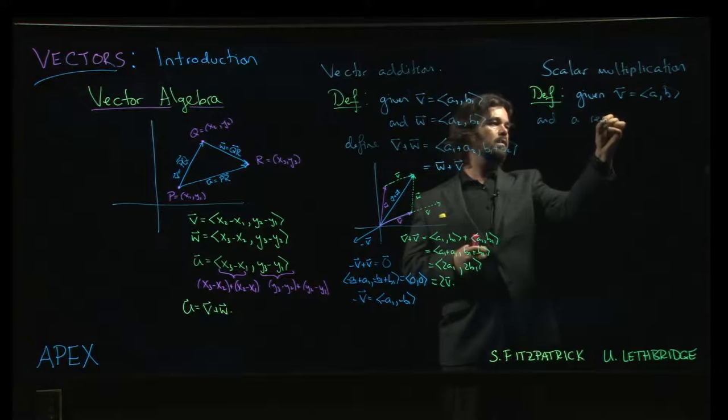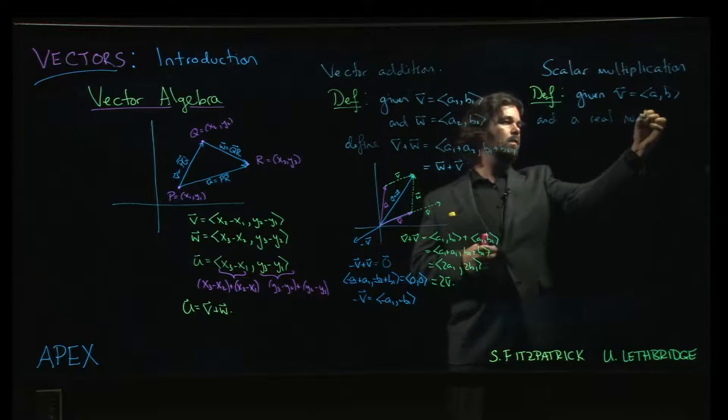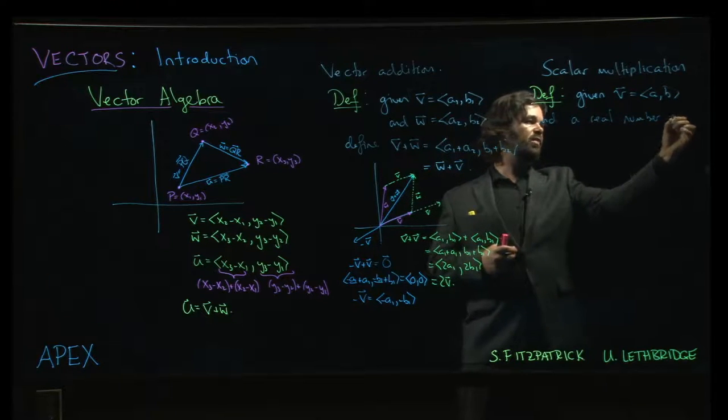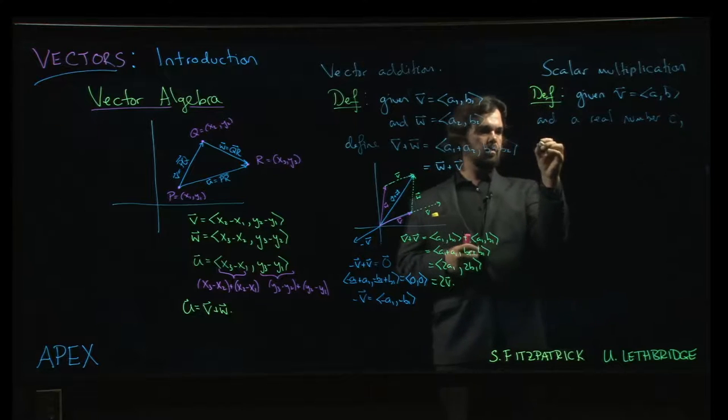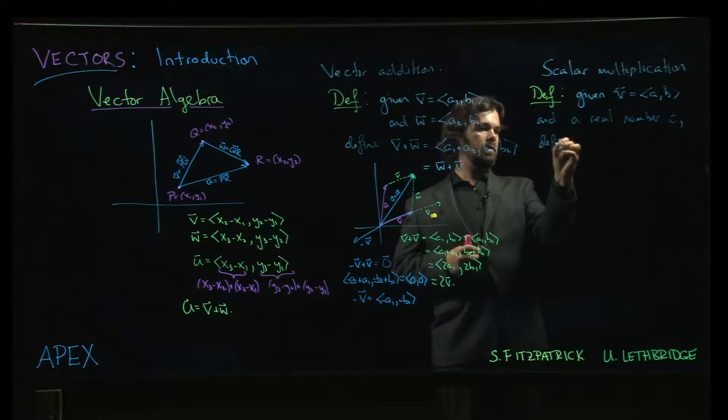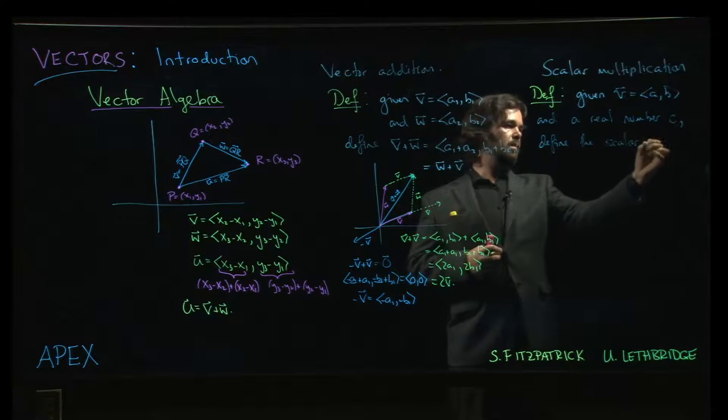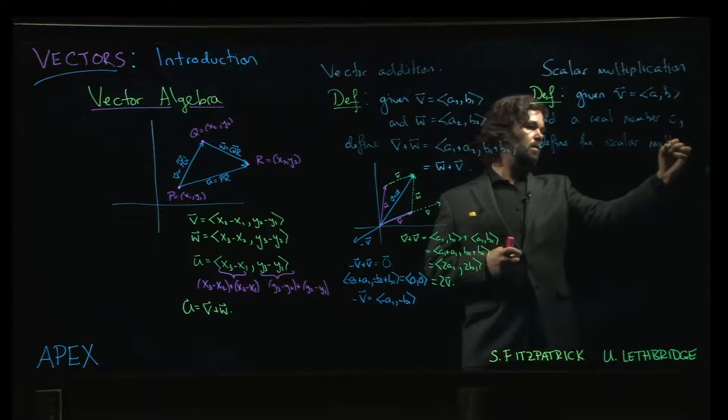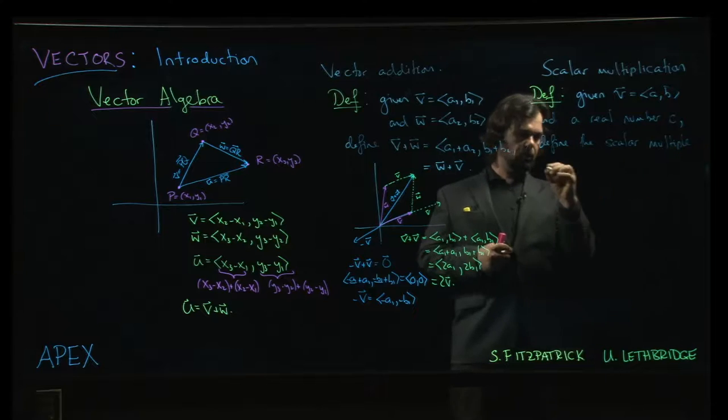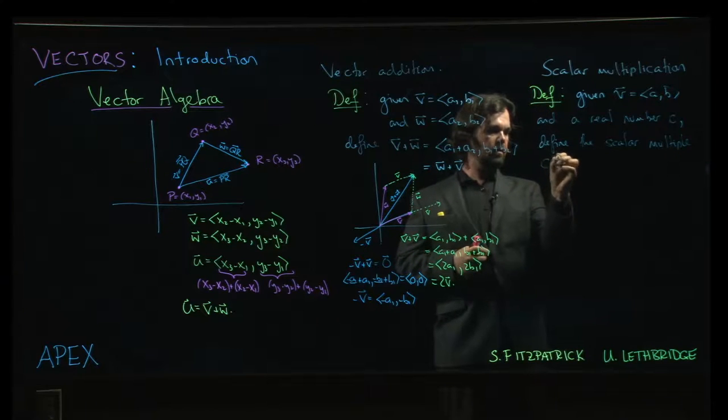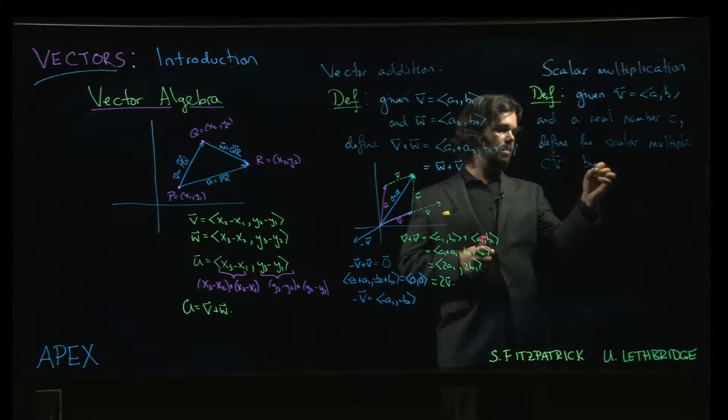And a real number, let's say c. We define the scalar multiple c times v by: